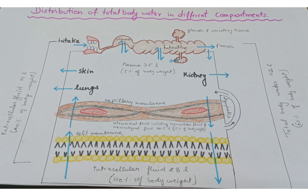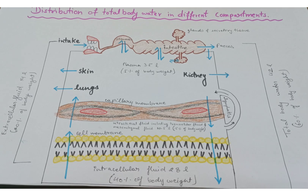The extracellular fluid compartment is formed by plasma, interstitial fluid including lymph, transcellular fluid, and mesenchymal tissue fluid. Plasma is the fluid portion of the blood and forms about 5 percent of body weight, which comes to around 3.5 liters. Interstitial fluid including lymph constitutes the major portion — three-fourths of the extracellular fluid.